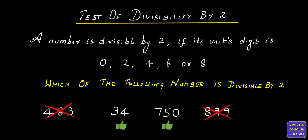3,802. The number in the unit's digit is 2, which satisfies the above rule. Therefore, the given number is divisible by 2.